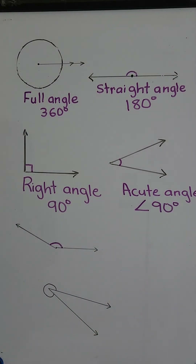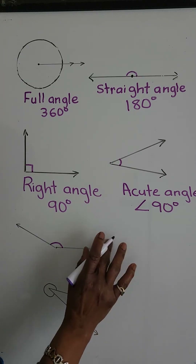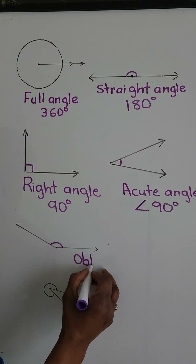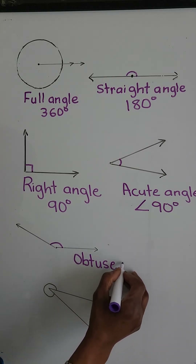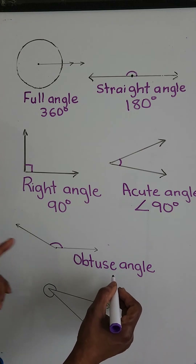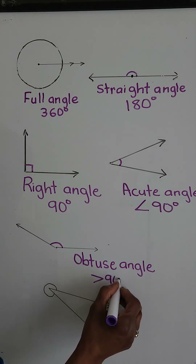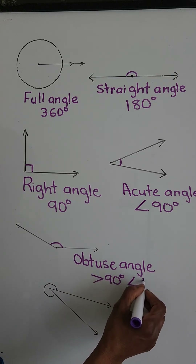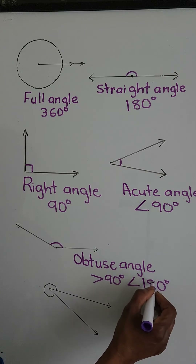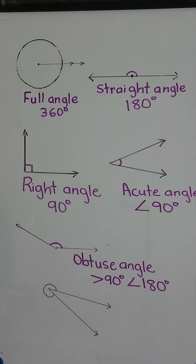Next we have an obtuse angle, and an obtuse angle measures more than 90 degrees but less than 180 degrees. So it measures more than a right angle but less than a straight angle.